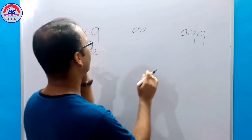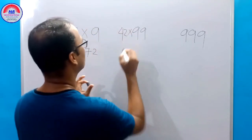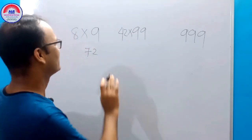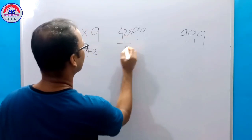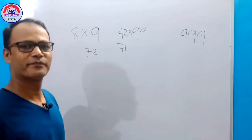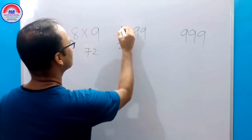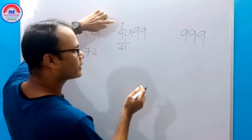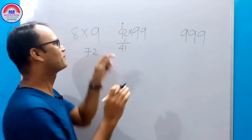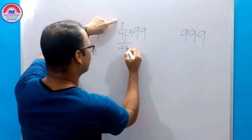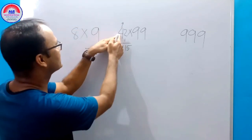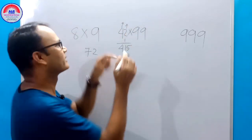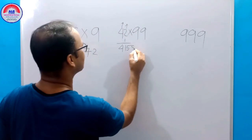But when we multiply 99 with any number, suppose 42 into 99 — how do we do that quickly? We just subtract 1 from 42, which gives 41. First write 41, then add a digit to get 9: 4 plus 5 is 9, so write 5. For the unit digit, always subtract from 10: 10 minus 2 is 8. So the answer is 4158.